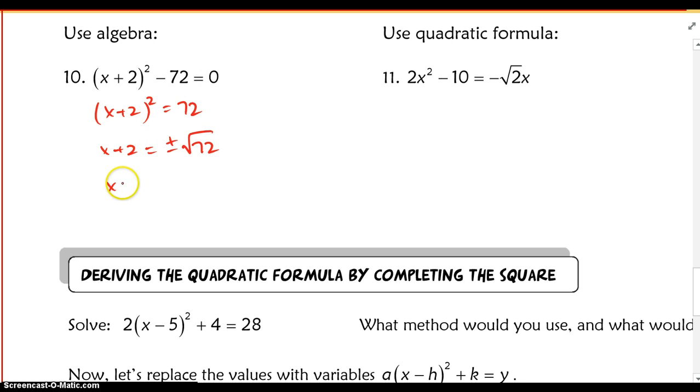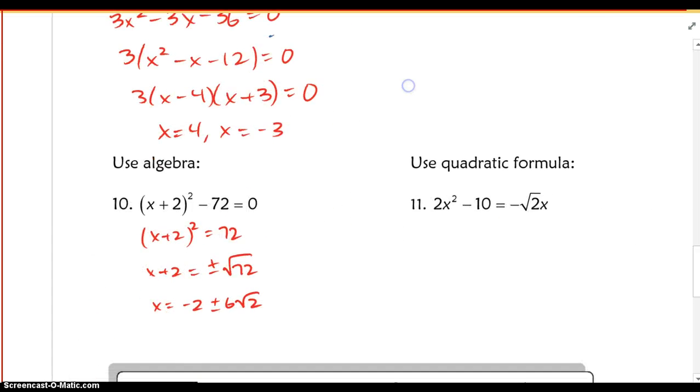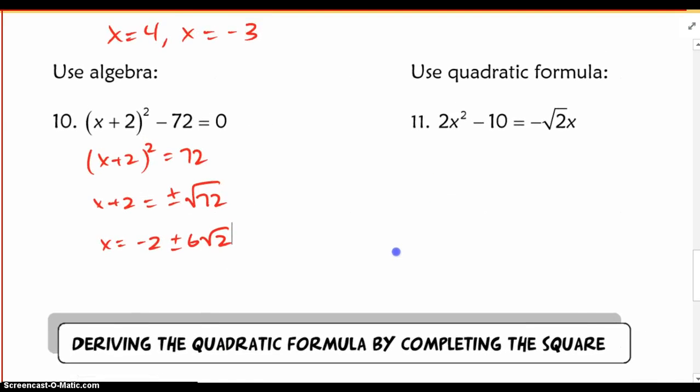So I'm just going to simplify here. And I move over that negative 2, and I'm left with... oh, I'm sorry, 6 root 2. So x is going to equal negative 2 plus or minus 6 root 2.